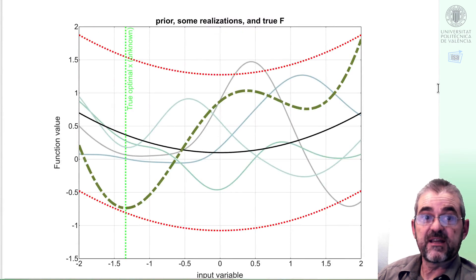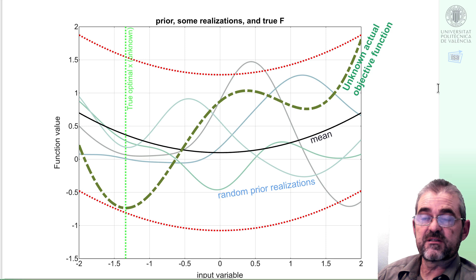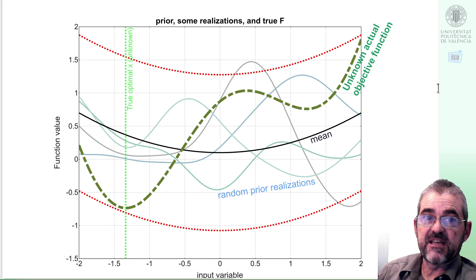So let us start discussing our particular example. In this example our prior will have the mean given by this black parabola, we'll have some confidence bounds in dotted red lines and the random realizations of that prior are these bluish or greenish curves, and the actual function to optimize will be this olive green dashed line.